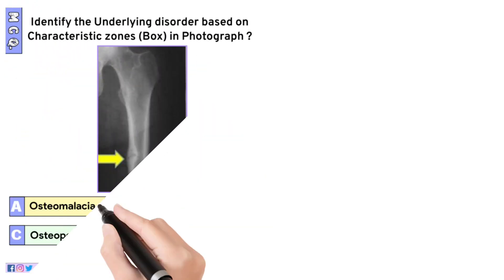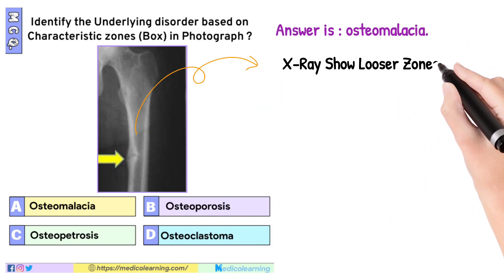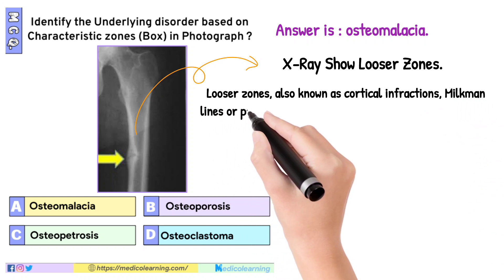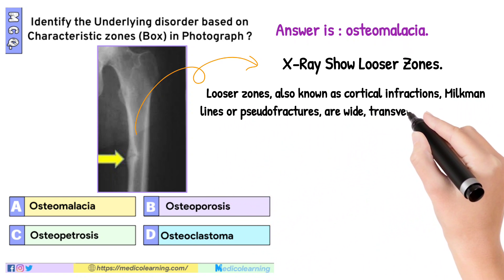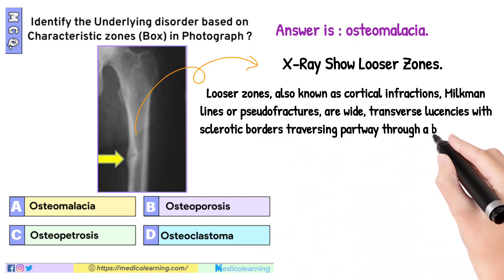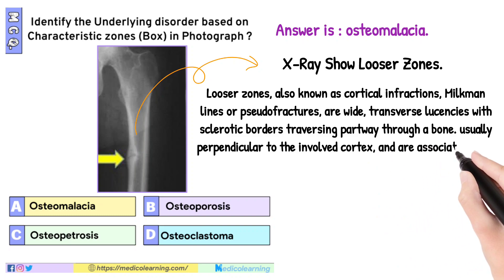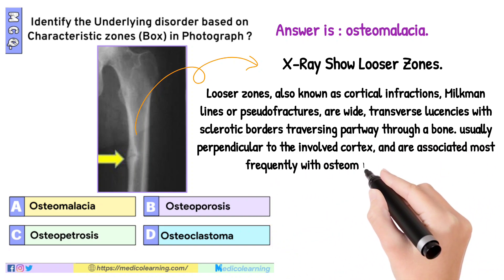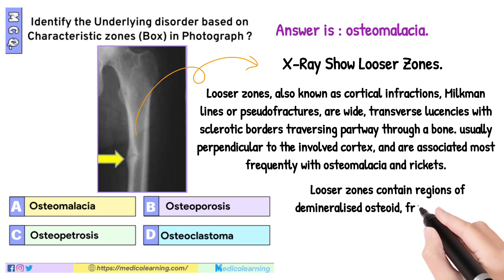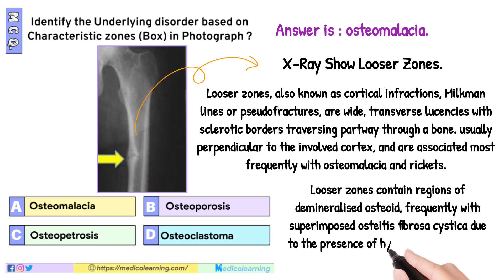In this question, the answer is osteomalacia. In this X-ray, Looser zones are visible. Looser zones, also known as cortical infractions, Milkman lines, or pseudofractures, are wide transverse lucencies with sclerotic borders traversing partway through a bone, usually perpendicular to the involved cortex, and are associated most frequently with osteomalacia and rickets. Looser zones contain regions of demineralized osteoid, frequently with superimposed osteitis fibrosa cystica due to the presence of hyperparathyroidism.